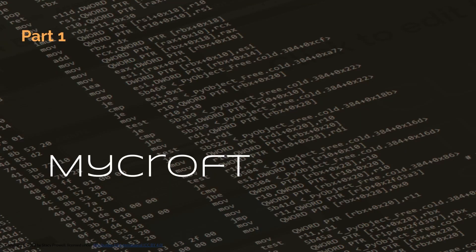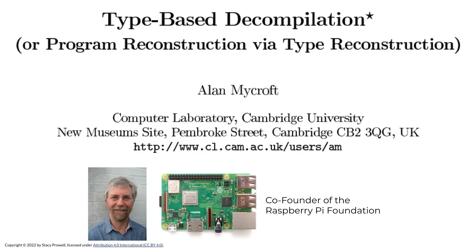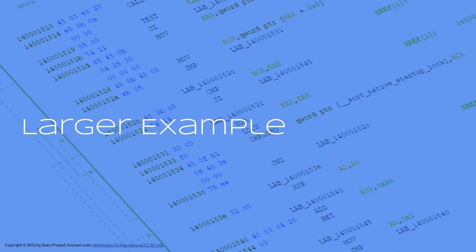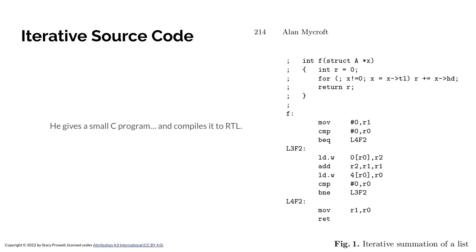Let's talk about Mycroft's stuff. There's our fellow again — co-founder of the Raspberry Pi Foundation — and his paper 'type-based decompilation.' We talked about his intuitive example last time, but now let's look at a larger example. There's some code over on the right, and it's not the trivial program we had before but not super complicated either. It has some control flow, some conditionals, et cetera.